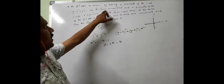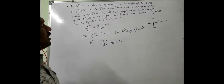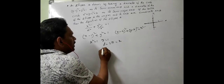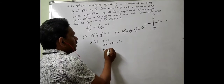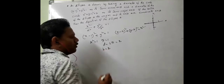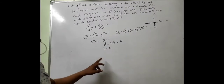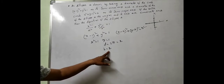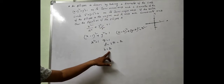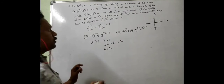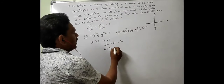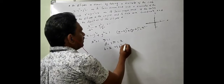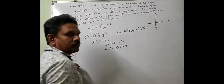That diameter of 2 is given as the length of the semi-minor axis. Length of semi-minor axis is b, so the value of b is equal to 2. That implies b square equals 4.